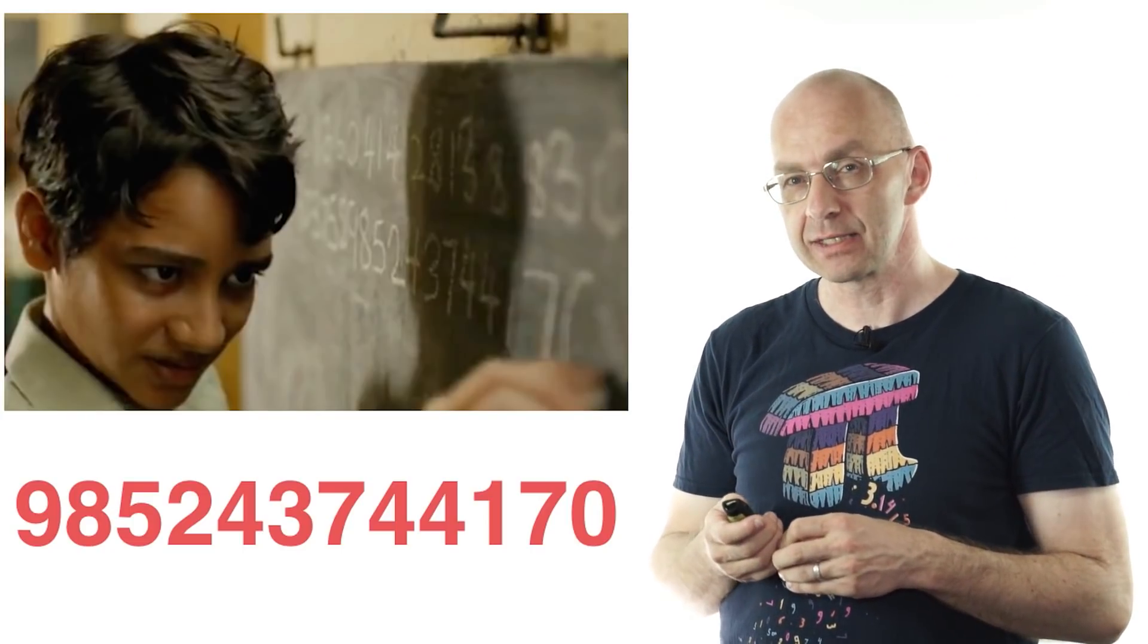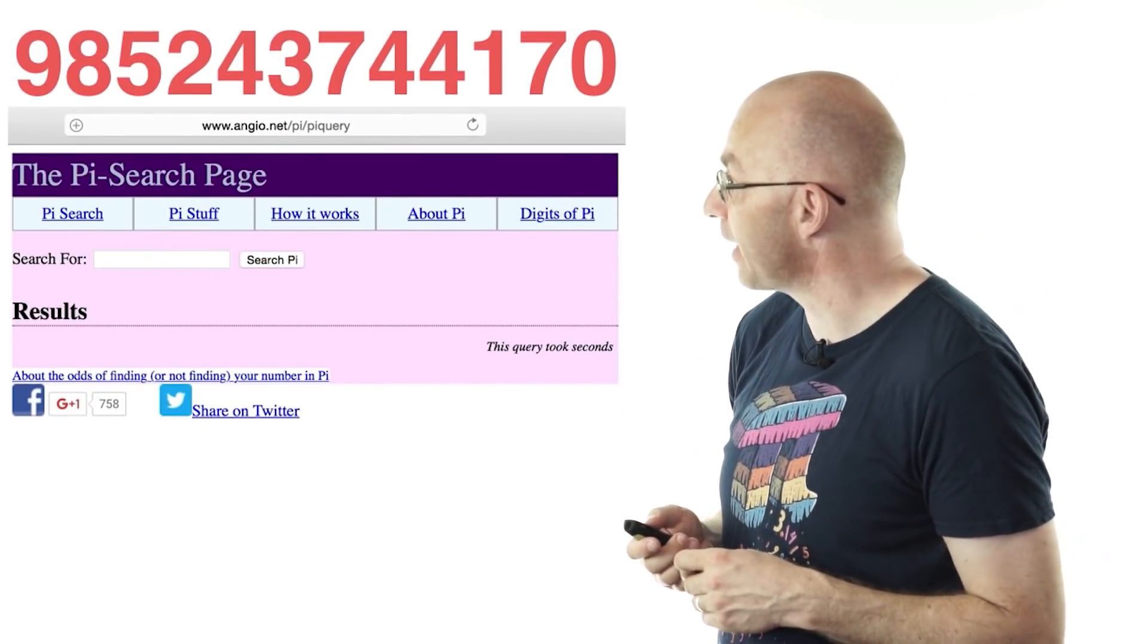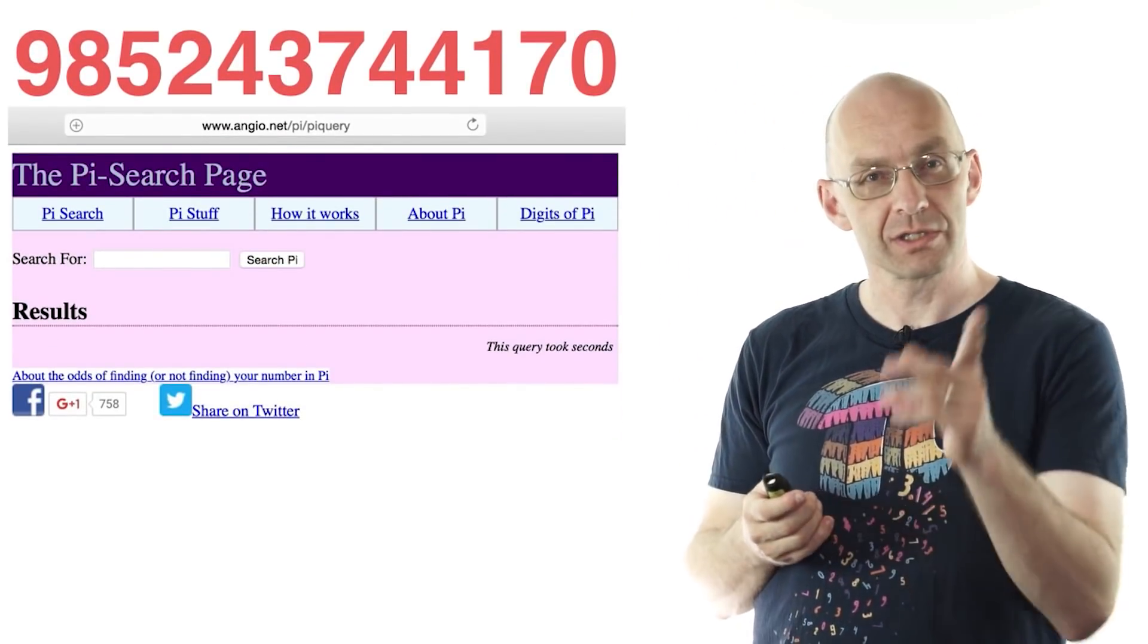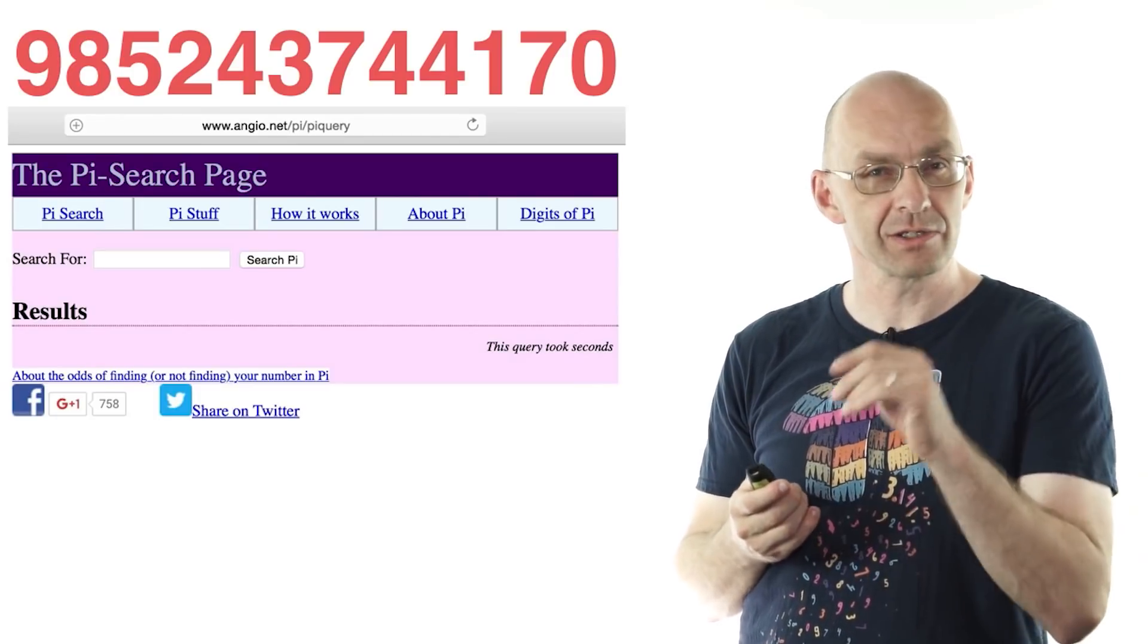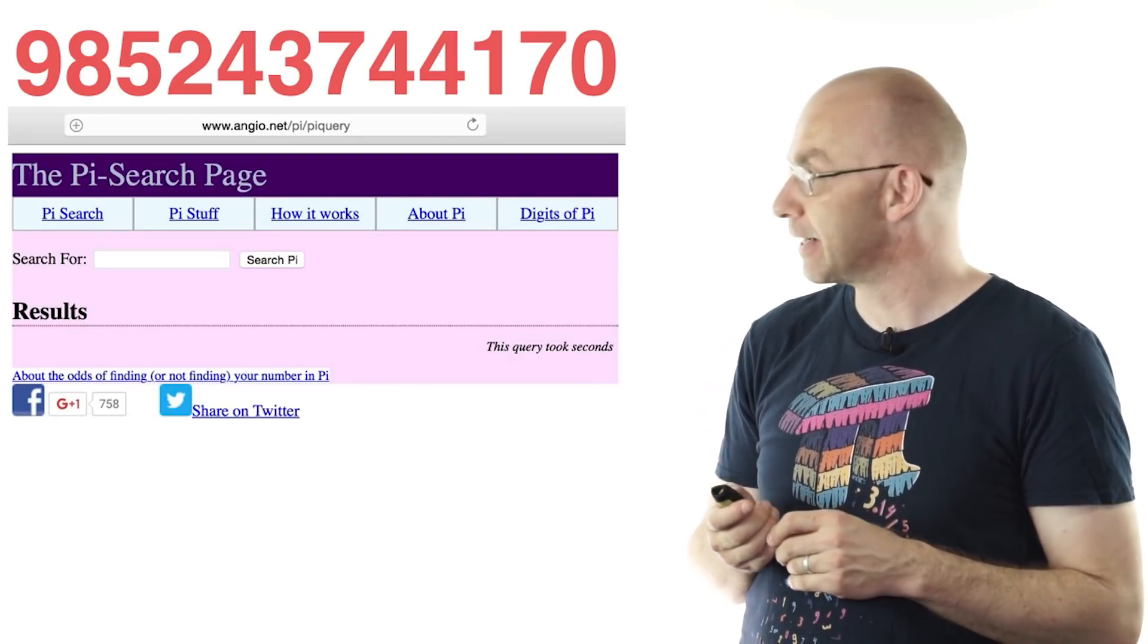985243744170, and that's definitely in Pi, and we can actually look it up where it occurs for the first time. There's a really nifty tool on the web which is the Pi search page.